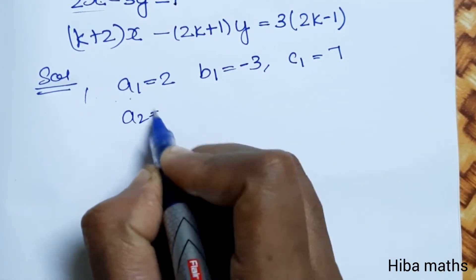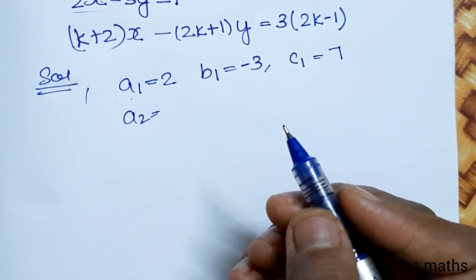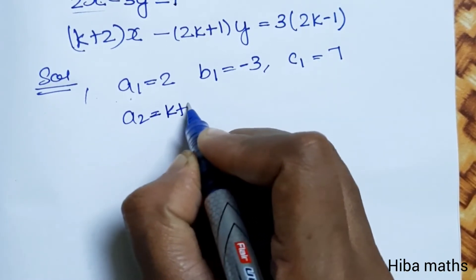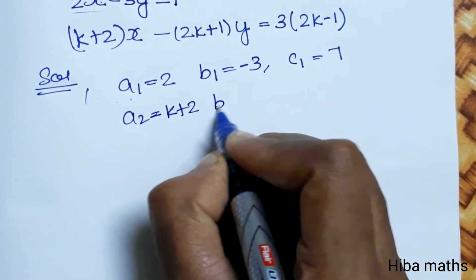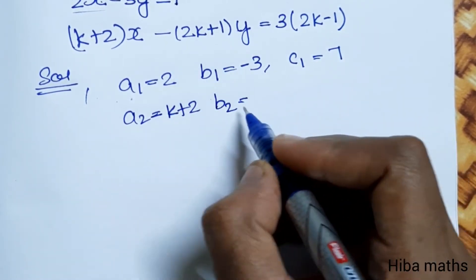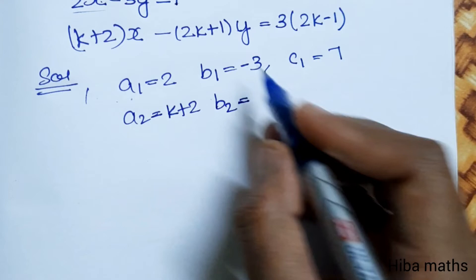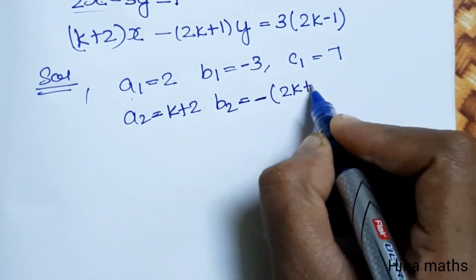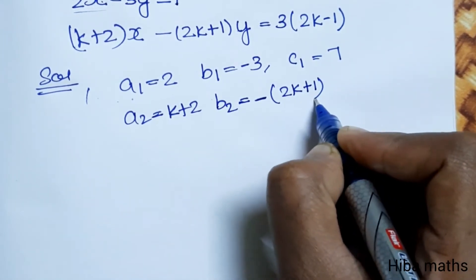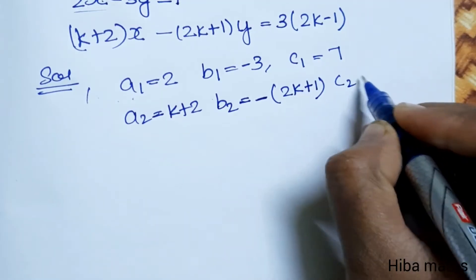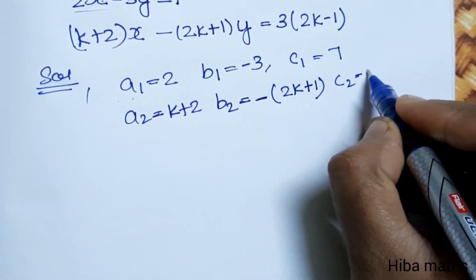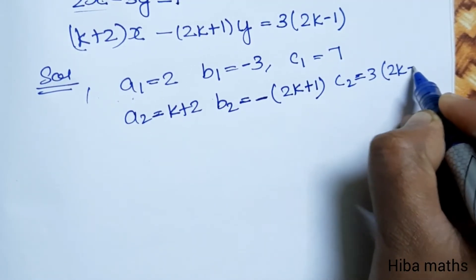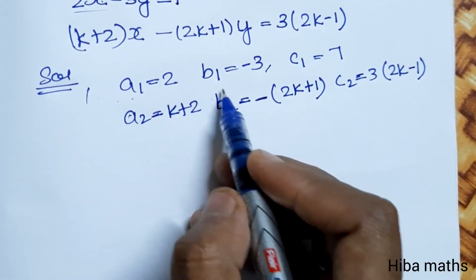From the second equation, a2 is k plus 2, b2 is minus 2k plus 1, and c2 is 3 into 2k minus 1.